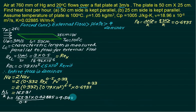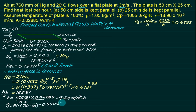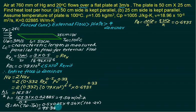Heat transfer for Case 1: Q = A·h·(T_w − T∞), with area = 0.5 × 0.25 m², h = 9.54 W/m²·K, T_w = 100°C, T∞ = 20°C. This gives Q = 95.38 W. Converting to kilojoules per hour (×3600 / 1000) gives 343.3 kJ/hr.